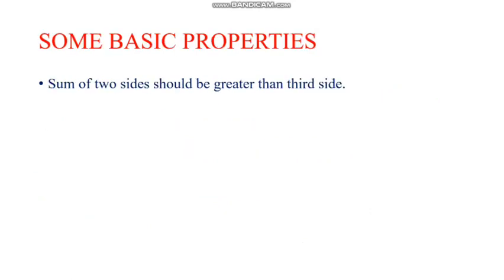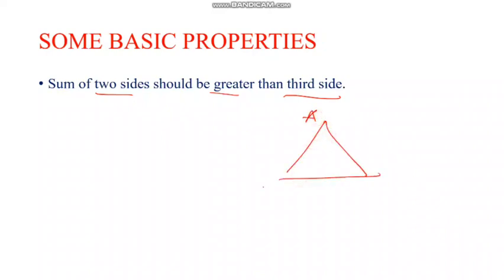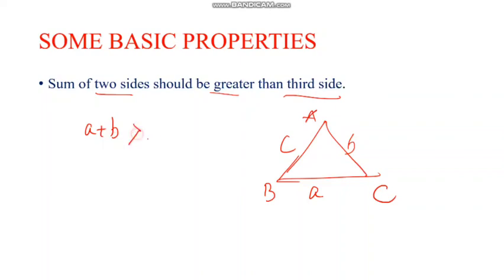Some basic properties. The sum of two sides should be greater than the third side. So, if you have sides A, B, C and want to check if you can draw a triangle: B plus C greater than A, and C plus A greater than B. The criteria is that any two sides should be greater than the third side.